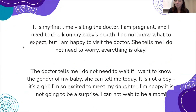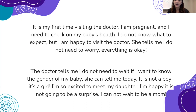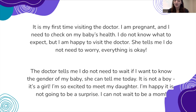This is a reading we practiced. If you want some extra practice, you can read this — I will read it together, you can pause and repeat. 'It is my first time visiting the doctor. I am pregnant and I need to check on my baby's health. I do not know what to expect, but I am happy to visit the doctor. She tells me I do not need to worry — everything is okay. The doctor tells me I do not need to wait if I want to know the gender of my baby — she can tell me today. It is not a boy, it's a girl! I'm so excited to meet my daughter. I'm happy it is not going to be a surprise.' In this paragraph we practice identifying where we see 'not.'